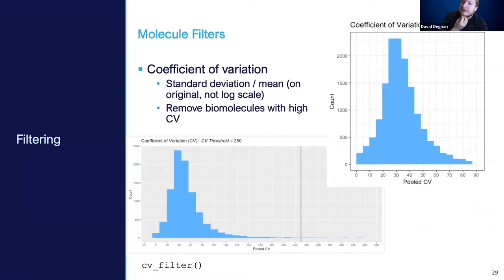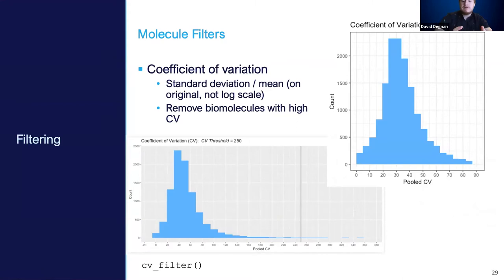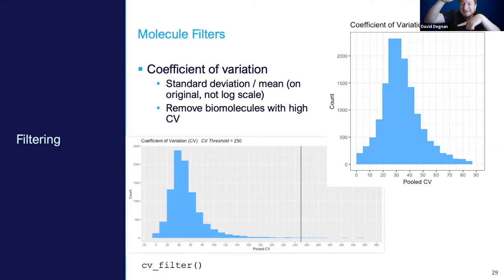Another filter is the coefficient of variation (CV) filter — the standard deviation divided by the mean within each treatment group. A very large CV means the abundance distribution for that biomolecule has a large standard deviation, which won't be informative in downstream analysis. As you go right in the CV distribution plot, you get wider whiskers on box plots; going left gives narrower ones. You want the distribution of smaller standard deviations.